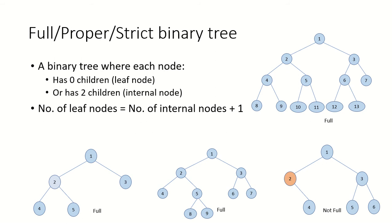In this video, we are going to take a look at different kinds of binary trees. The first is a full binary tree, also referred to as a proper or a strict binary tree. As we know, in a binary tree every node can have 0, 1, or 2 children.